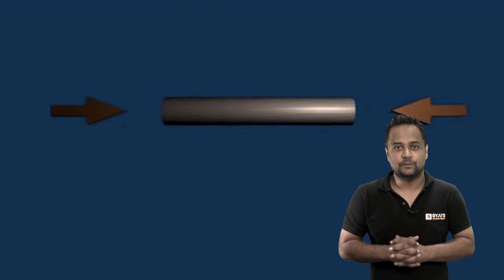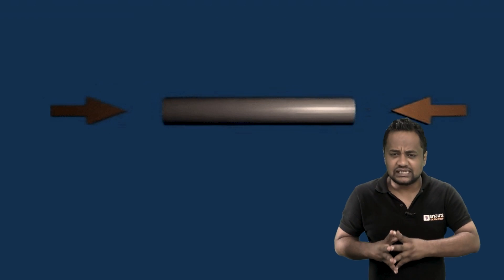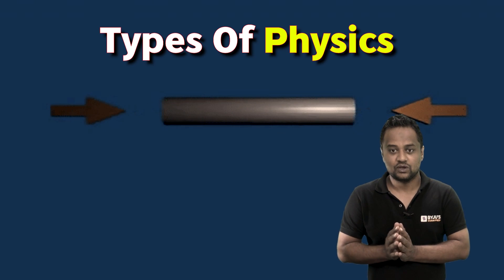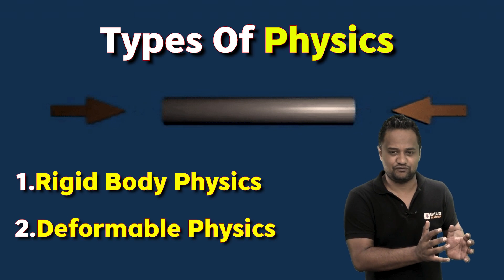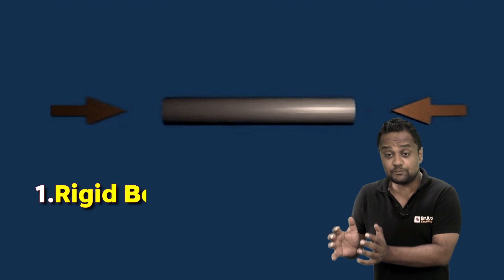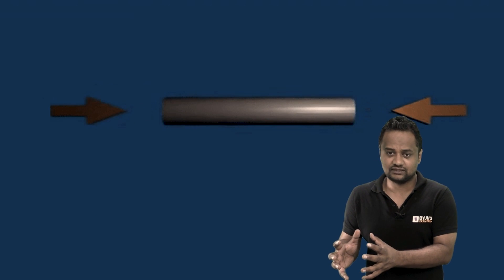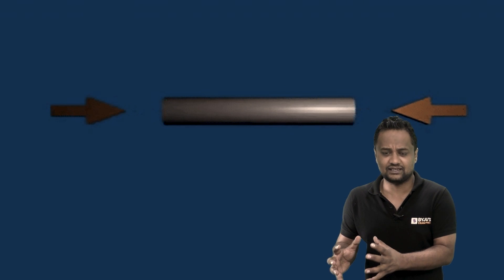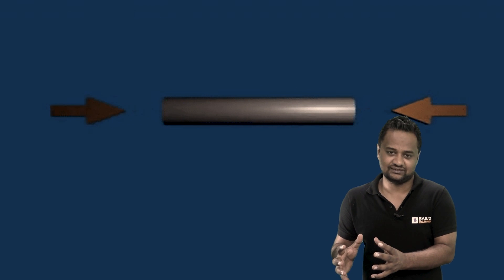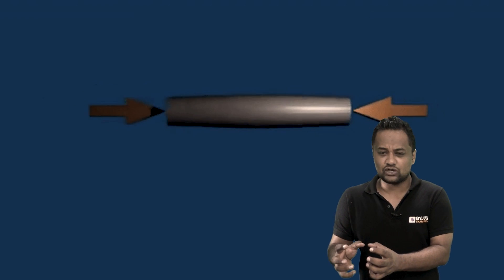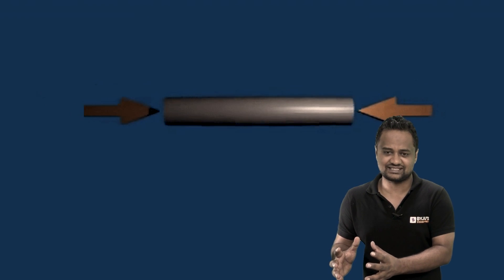Before Poisson's ratio, let me tell you that physics can be broadly classified into two types: rigid body physics and deformable physics. Rigid body physics means we consider a body to be rigid — whatever forces we apply, the relative position of two points is not changing. No change in shape, length, or size — no elongation or contraction.